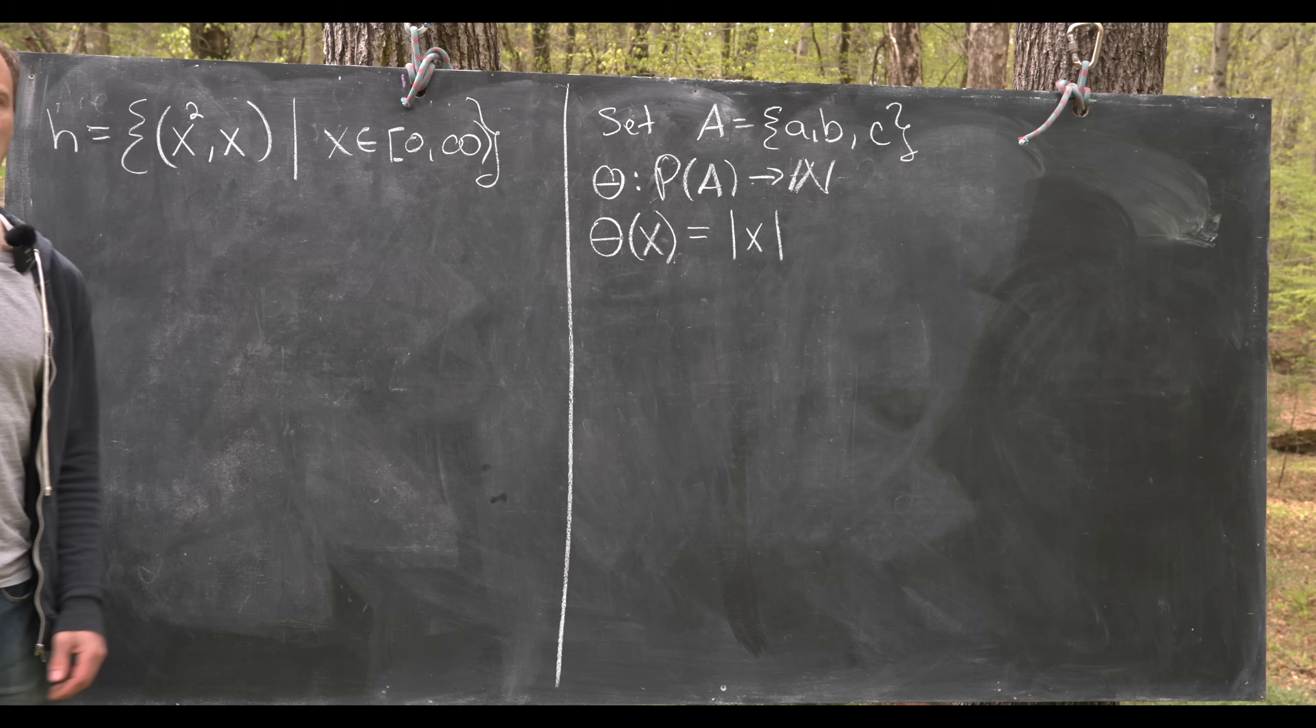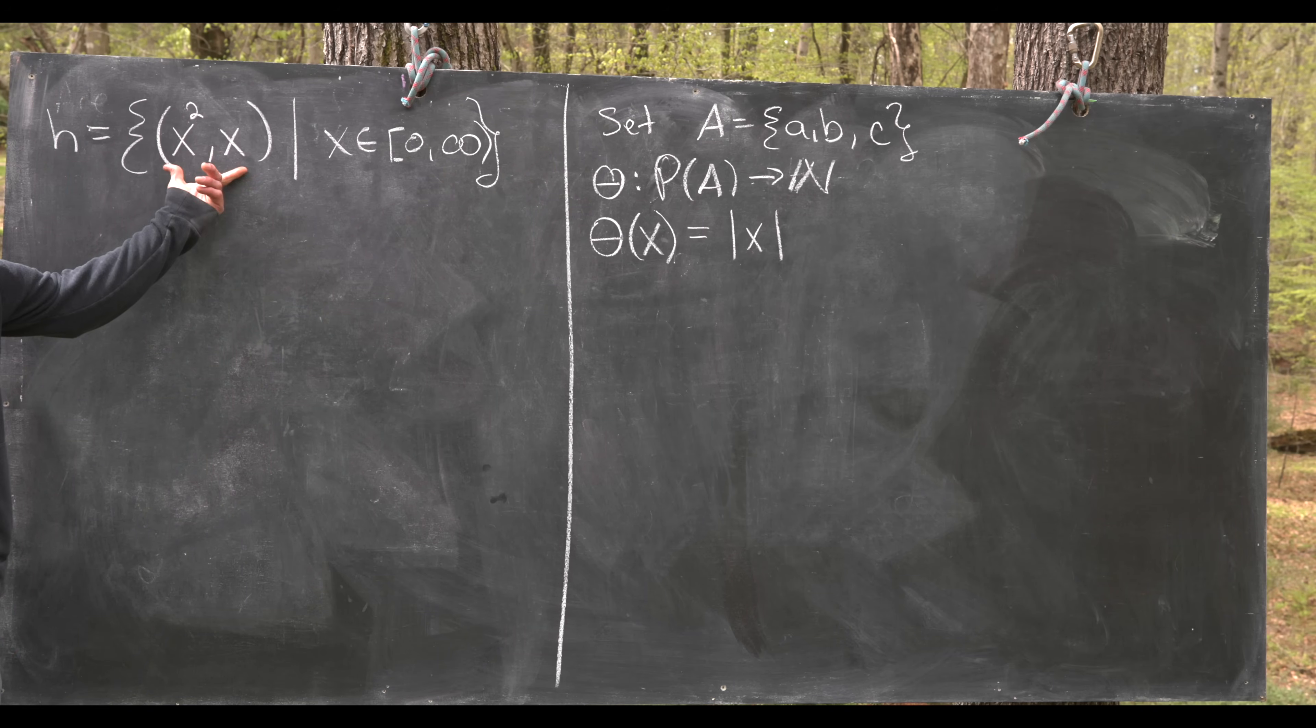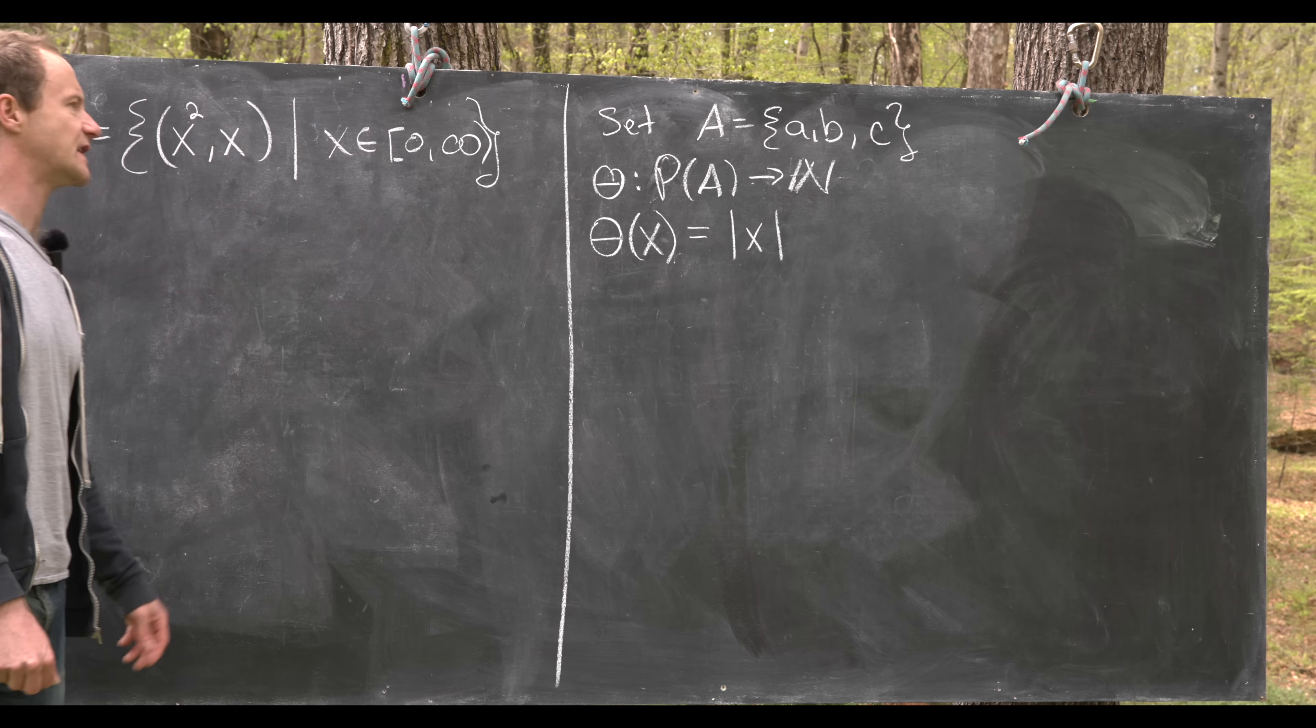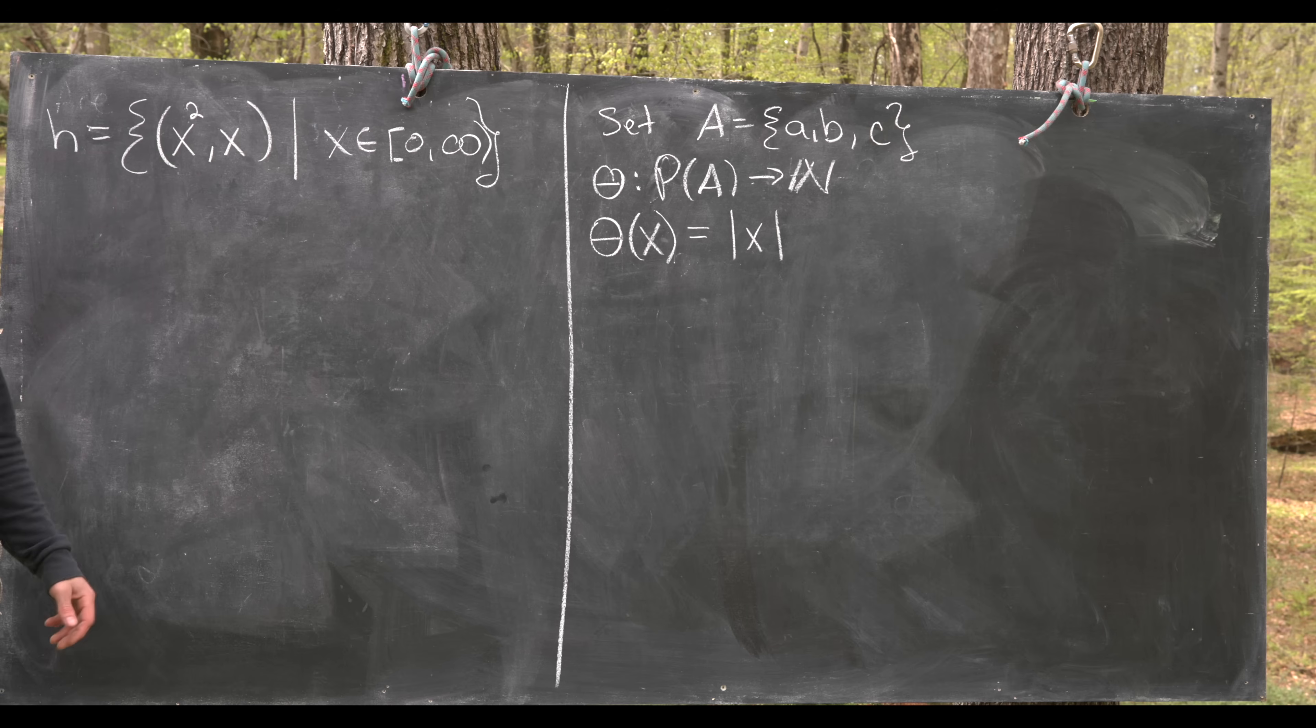Okay so let's get rid of this and we're going to look at two more examples. First off we'll look at two more examples. So first this would be the would-be function H. So it's defined by ordered pairs (x²,x) where x ranges between all non-negative real numbers.